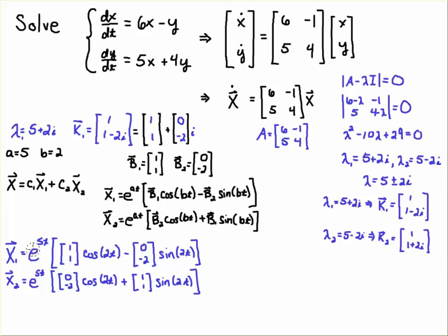So I'm gonna have e to the 5t times, and then let's see, b1 was [1, 1], so I have [1, 1] cosine 2t minus b2 which is [0, -2]. So this minus sign is part of the formula, it does not come from this minus 2 here. That still stays intact. I left it like that so you would see how it's input directly from the formula. And then sine 2t.